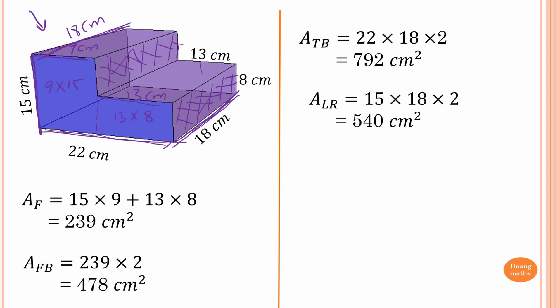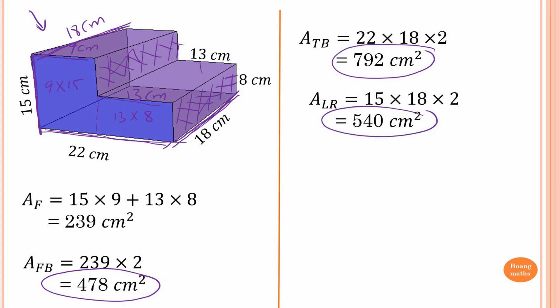Now adding everything together: the front and back give 478, the top and base give 792, and the two sides give 540. So the surface area is 478 plus 792 plus 540, which gives 1810 square centimeters. Thank you so much for watching.